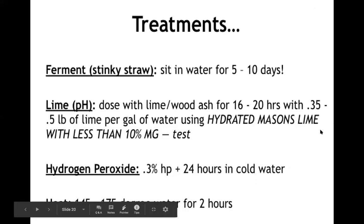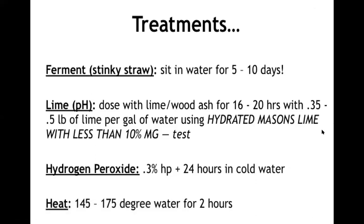For lime treatment, most common is hydrated mason's lime with less than 10% magnesium content. You can also use wood ash at a very high amount, though commercial growers prefer lime since a small amount achieves the desired effect — raising the pH of water to at least 10. Hydrogen peroxide is another option with a whole guidebook series online, though not widely used. Most common is heat pasteurization at generally 140 up to 175–180°F water for two hours.